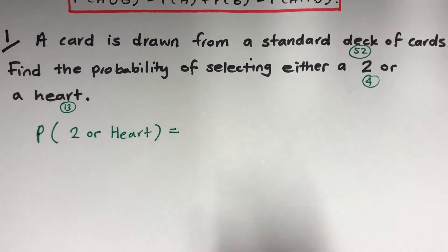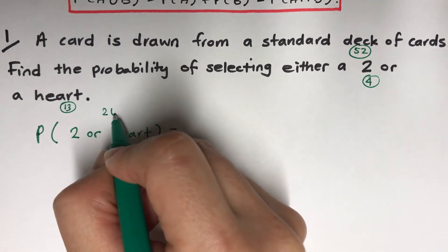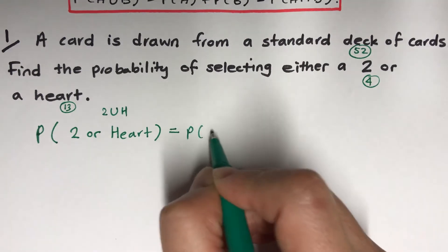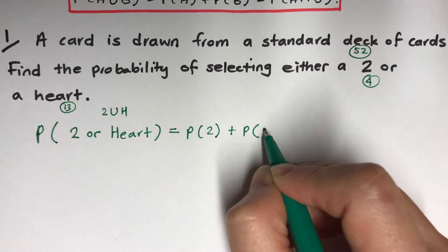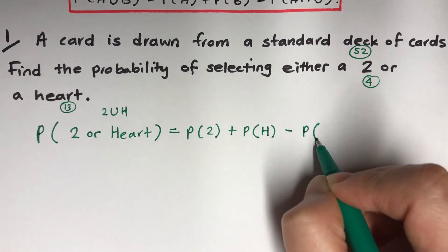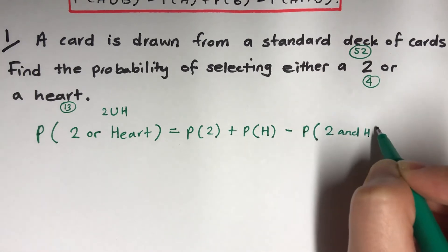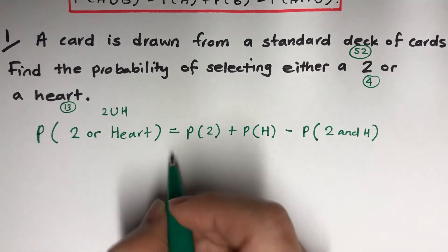I'm going to think about what formula I'm going to use. I'm going to use this one. It's almost like it's saying 2 union heart, so it would be P of getting 2 plus P of getting heart, take away P of getting 2 and heart.